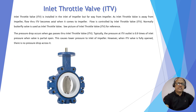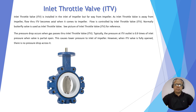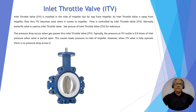ITV is just a butterfly valve — any type of butterfly valve can be used as an ITV. The big disadvantage of using ITV is there is a considerably large pressure drop as compared to IGV. Typically, the pressure drop across ITV is 0.9 times of inlet pressure — that means if the inlet pressure is 10 bar, you will get only 9 bar at the outlet of ITV, which is the inlet to the compressor. So the performance of the compressor will be affected if you use the ITV. However, ITV is cheaper cost-wise than IGV.